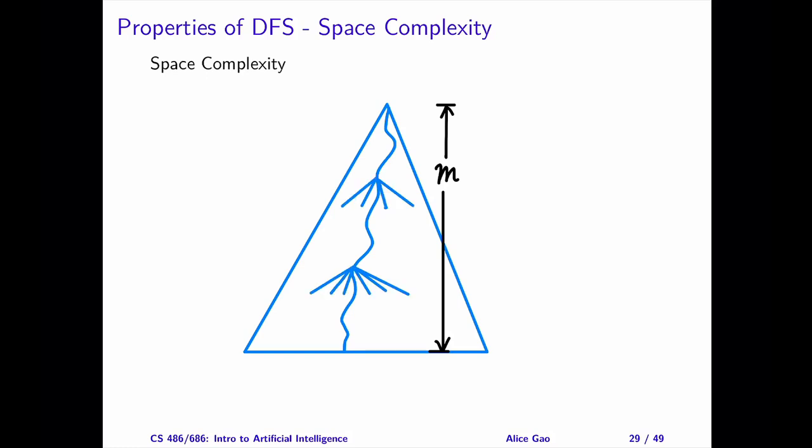How many siblings does each node have? The maximum number of siblings is B, the branching factor.